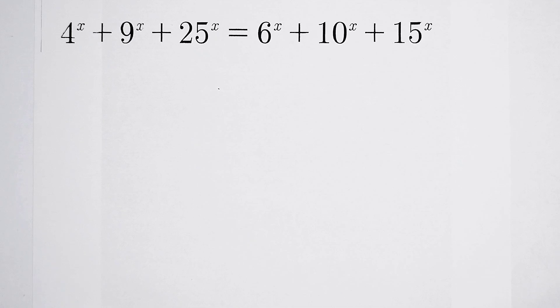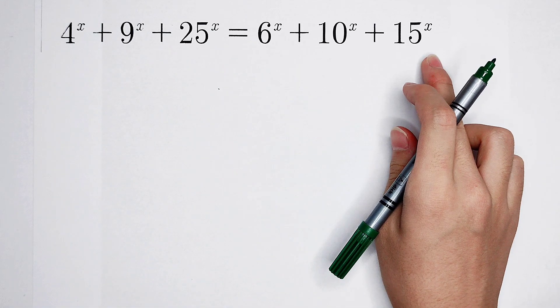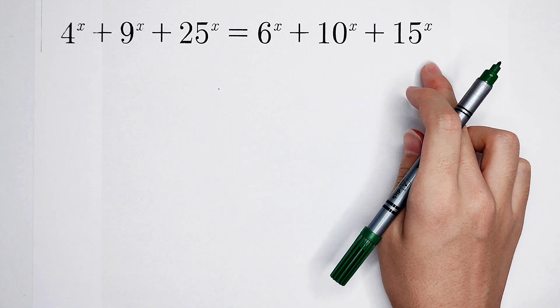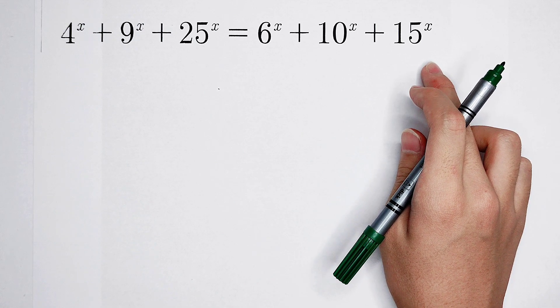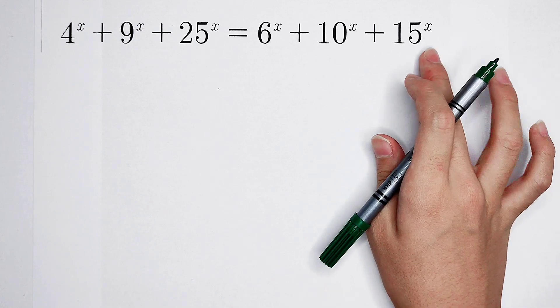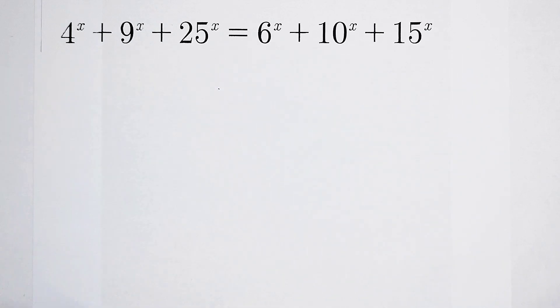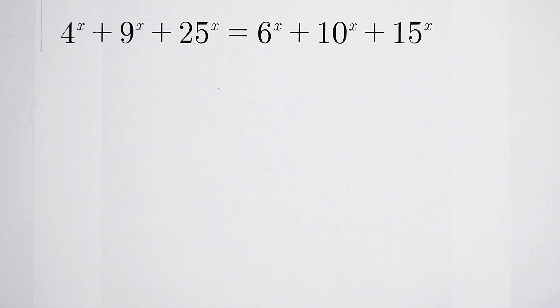Welcome to Math Winner. Solve this equation for x. What should we do? It looks horrible, isn't it? Because x appears six times and they're all in the exponents.